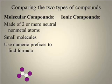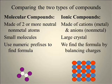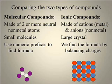Let's compare these two types of compounds. Molecular compounds have two or more neutral nonmetal atoms. These are small molecules invisible to the eye, and we use numeric prefixes to determine their names and formulas. Ionic compounds, by contrast, are made out of cations — usually metal — and anions — nonmetal. These are large crystals that are so large we can see them, like in the case of most rocks. We find their formula by balancing charges to make them equal zero.